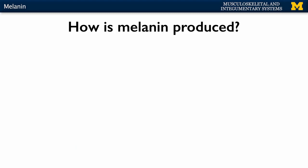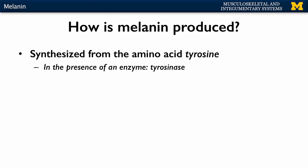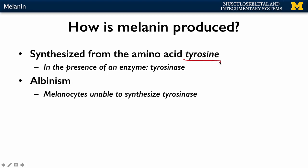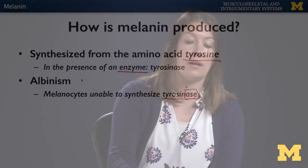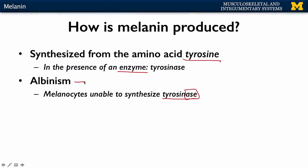How is melanin produced within the melanocyte? It is synthesized from the amino acid tyrosine, but it cannot be synthesized unless you have the specific enzyme tyrosinase. If you are not able to synthesize this particular enzyme, you're not able to produce melanin — and that's what the disorder albinism is. You will have no melanin produced, which is most obvious in the skin, but also affects hair and iris color.